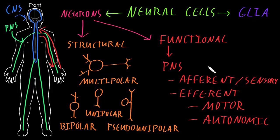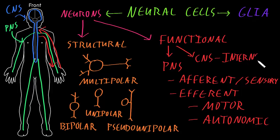In the central nervous system, most of the neurons are called interneurons. Interneurons are neurons that connect other neurons together. So those are some of the big categories of structural and functional types of neurons. Now let's talk about the other neural cells — the glia.